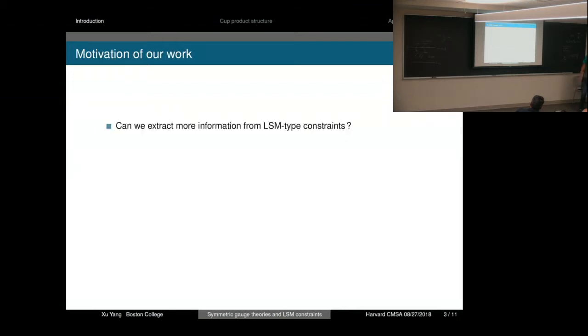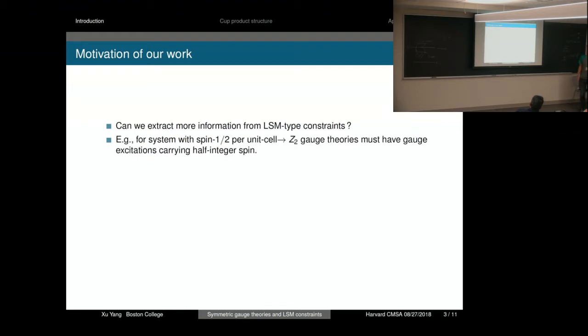The question we want to address is: can we extract more information from LSM-type constraints? Let's look at a typical example. For a system with spin-half per unit cell, we know that if we want to realize the two gauge theories, then there must be gauge excitations carrying this spin-half.